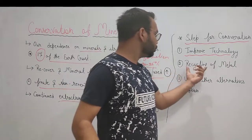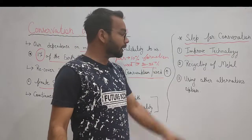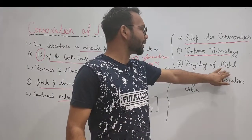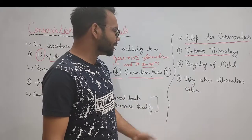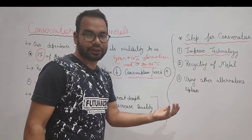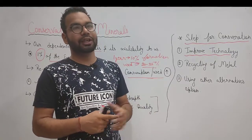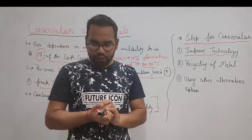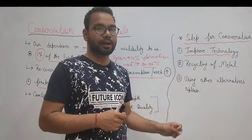The second step is recycling of metals. We should recycle minerals so that we can use them again. The third step is to use alternative options — for example, good quality plastic can be used instead of copper or steel in some applications. This way we can conserve minerals.